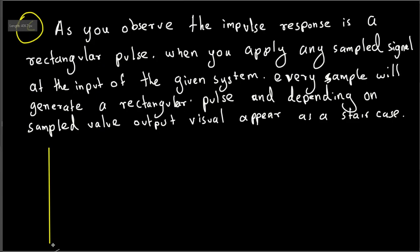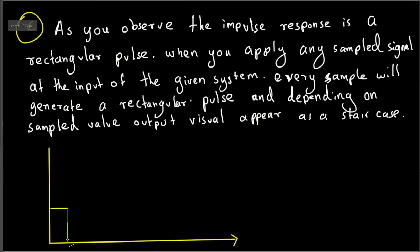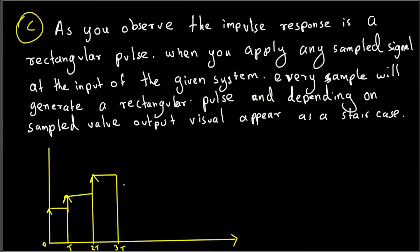Looking at the visual representation: starting at 0, each interval is T_s, then 2T_s, then 3T_s, and so on along the time axis. As each sample generates a rectangular pulse of duration T_s, the output steps up or down at each interval, producing the characteristic staircase shape.